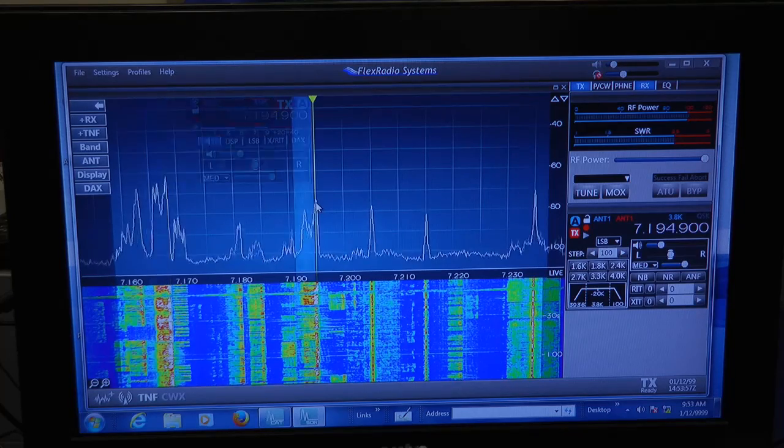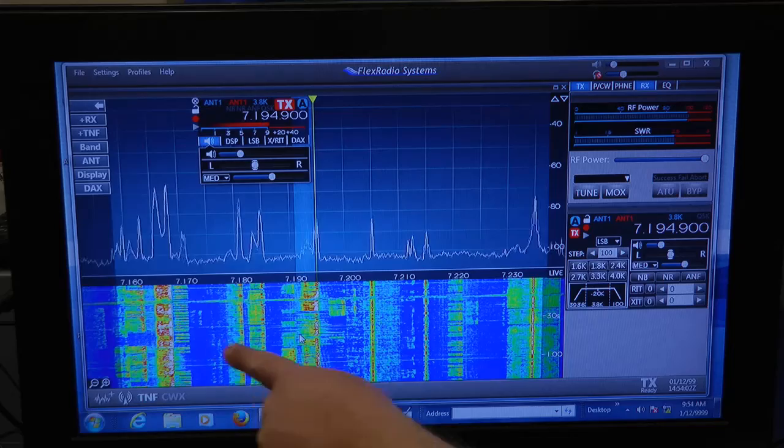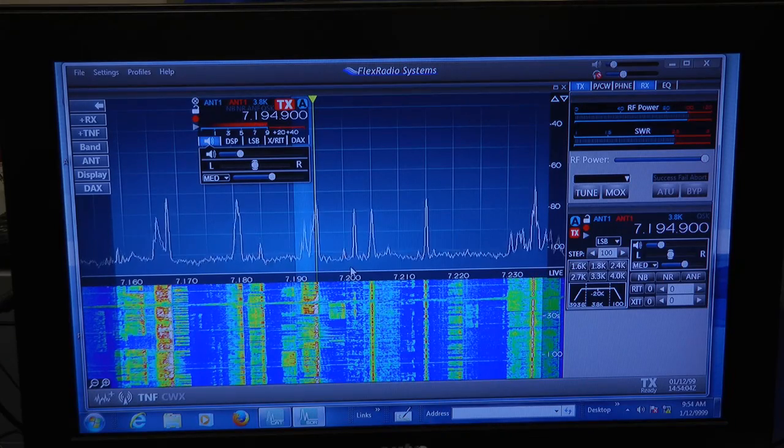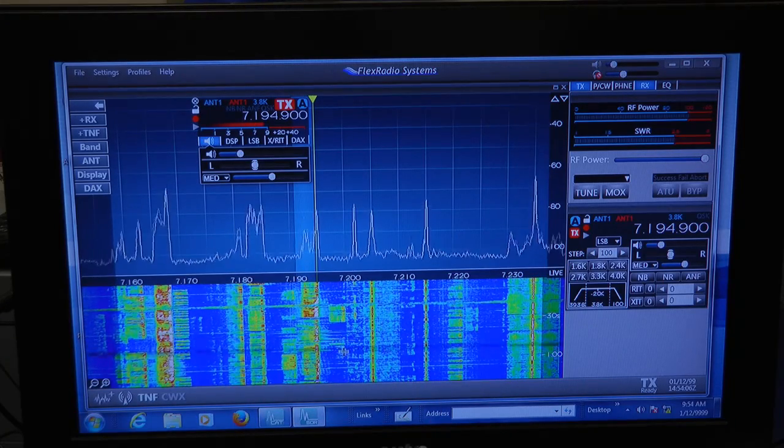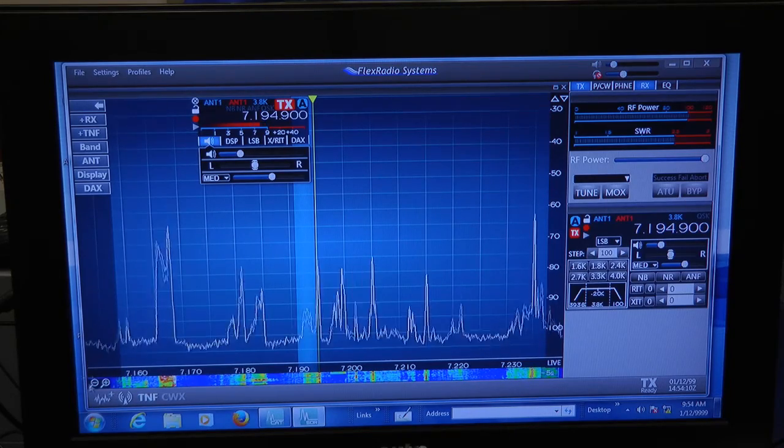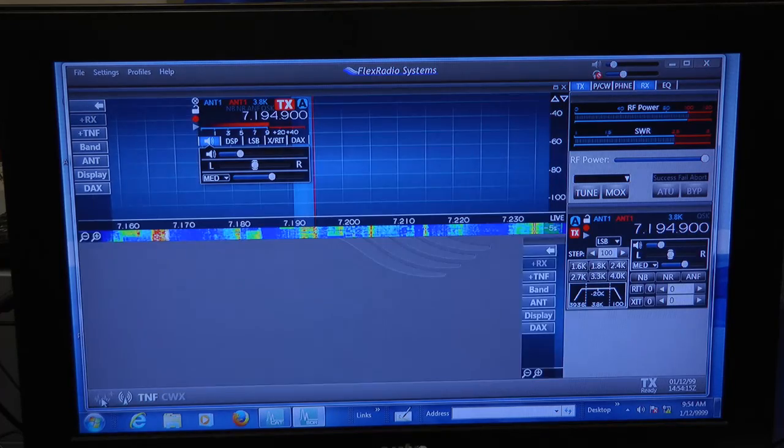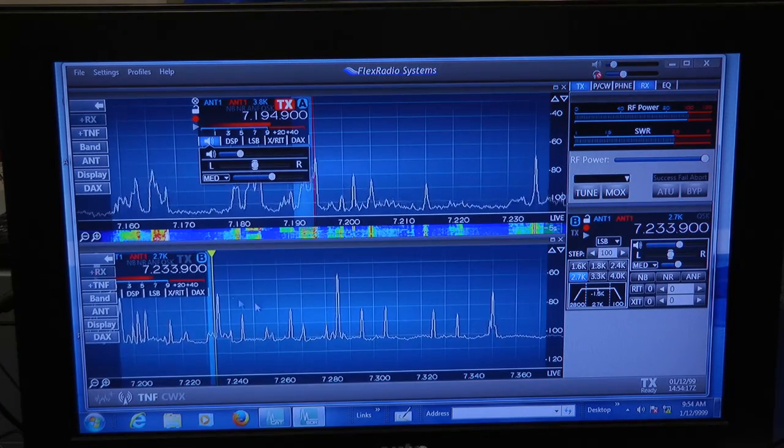Click over here and we got another signal. Here's, of course, the waterfall down here. We can minimize that by dragging the bar down like that. Or we can add another receiver right down here. Let's click on the new pan adapter, and here's the second receiver.